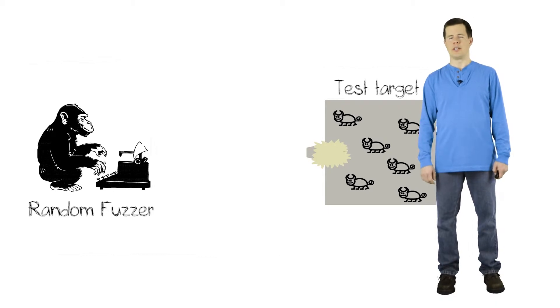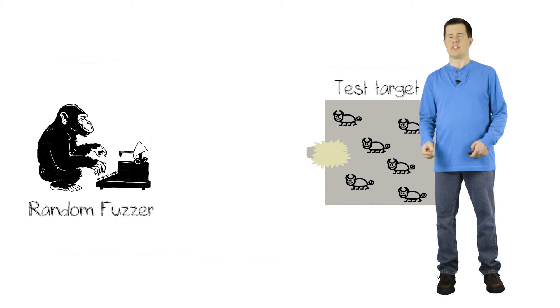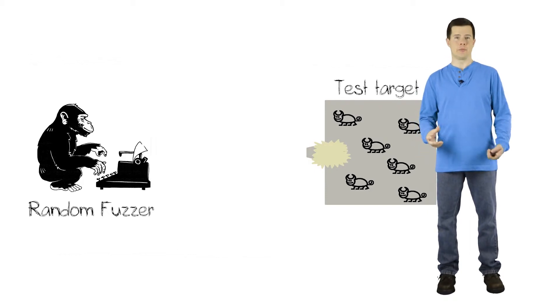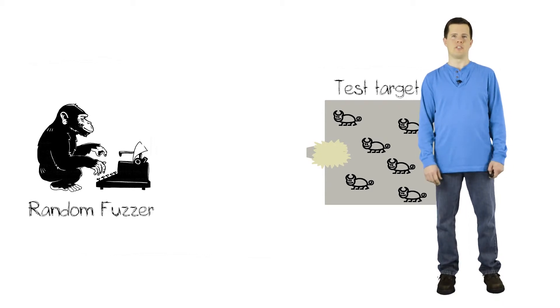And it is true that like the monkeys sitting at the typewriters, if you run a random fuzzer long enough, eventually it will randomly produce something that looks like a real protocol message. And then maybe you'll do some effective testing and maybe you'll find a bug. But like the monkeys and the typewriters, it's going to be a very long wait. So this is not a very effective way of doing testing.